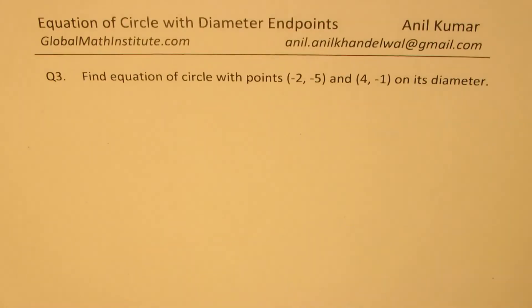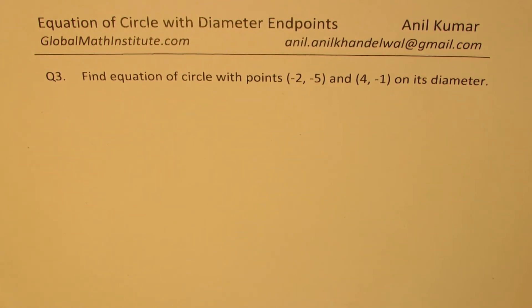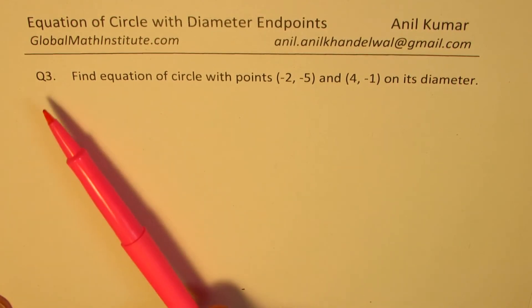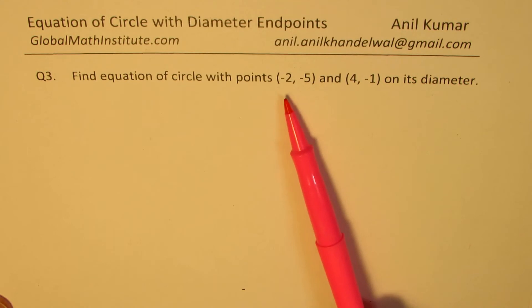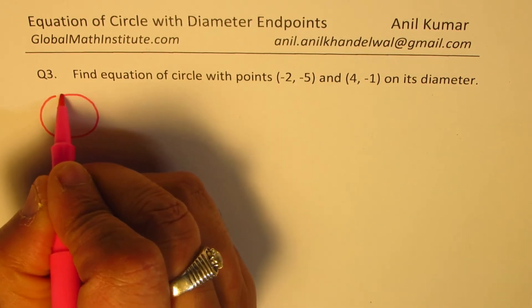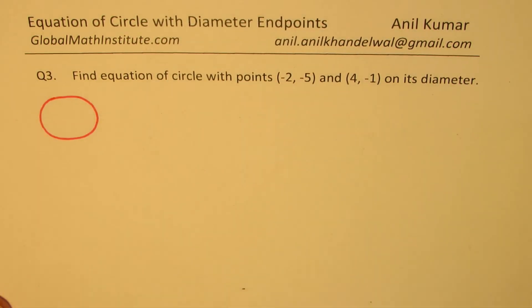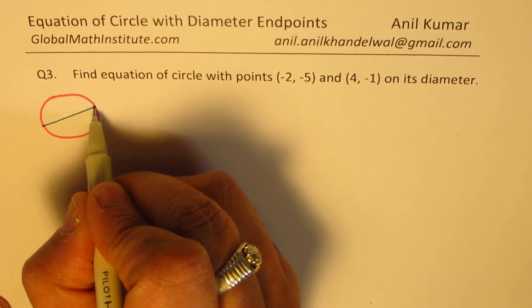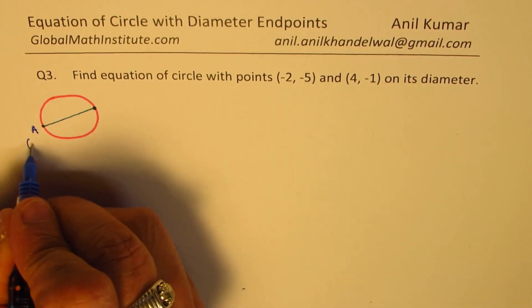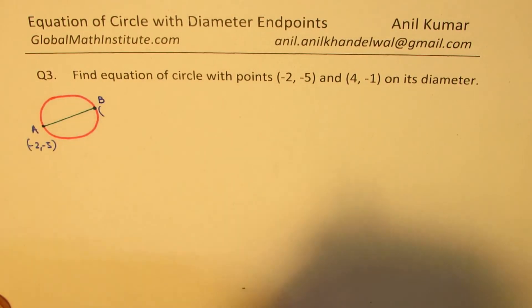Now let's take the last example, Question 3: Find the equation of the circle with points (-2, -5) and (4, -1) on its diameter. I'd like you to pause the video, answer this question, and then check with my solution. Let me sketch to make it absolutely clear. Point A is (-2, -5) and point B is (4, -1).